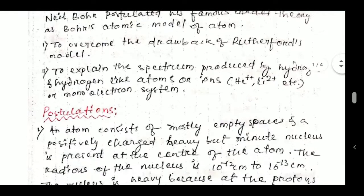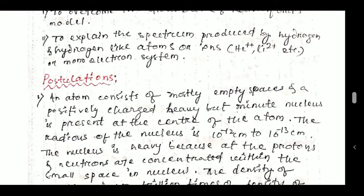The postulations of Bohr's model: First, an atom consists of mostly empty space, and a positively charged, heavy but minute nucleus is present at the center of the atom. Inside the atom there are no masses spread out; a nucleus of negligible size is present, which possesses a definite amount of mass because so many neutrons and protons are concentrated within that small nucleus.